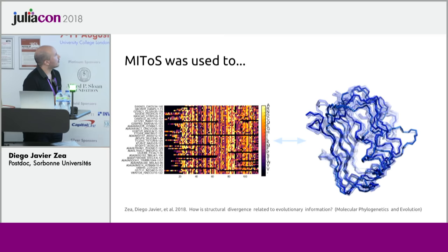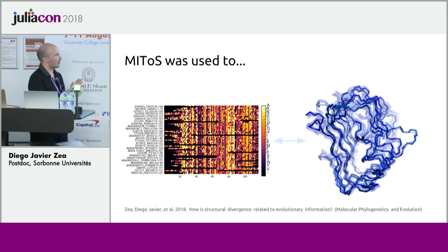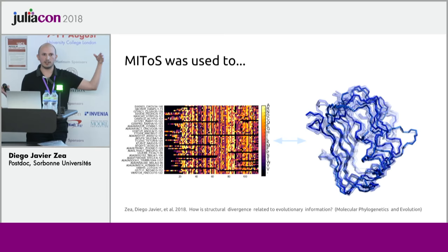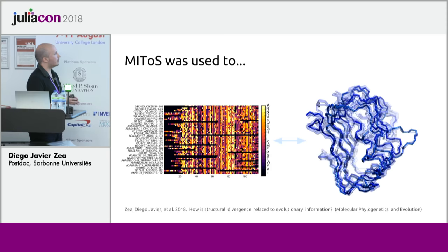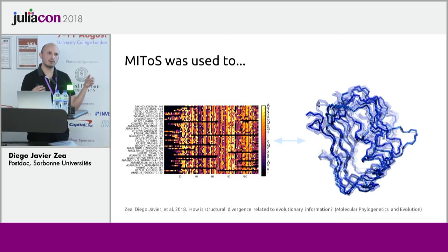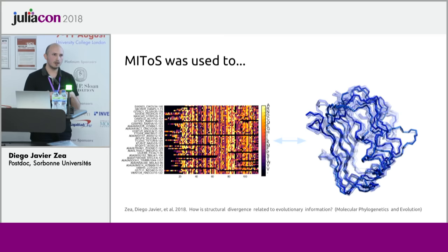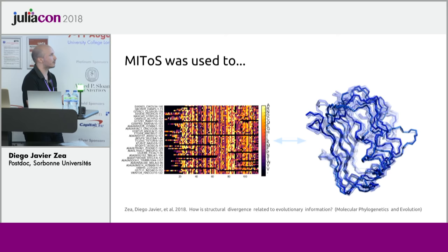We use that for studying how conservation and co-evolution relate to the differences in structures we can see for a protein family. In general, most studies use a single structure because it's the most practical and easy approach. But since Mitos allows us to incorporate multiple structures, we wanted to see how that works. What we found is that integrating information from multiple structures, we can get better insight into what conservation and co-evolution mean in the multiple sequence alignment.